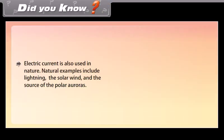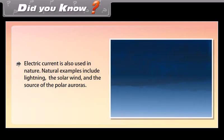Electric current is also used in nature. Natural examples include lightning, the solar wind, and the sources of the polar auroras.